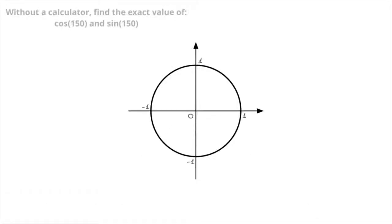As a first example, we're asked, without a calculator, to find the exact value of cosine of 150 and sine of 150. The angle 150, starting from the point with coordinates 1, 0, which is always our starting point,